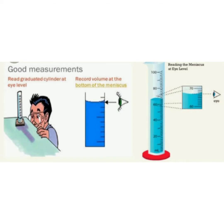To choose the correct measuring vessel, we have to know two important things: the amount of liquid that needs to be measured, and the degree of accuracy with which the volume must be measured.